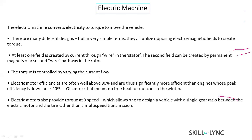Torque is controlled by varying the current flow — increasing torque requires higher current, and reducing current reduces the torque the motor produces. Electric motor efficiency is often well above 90%, making them significantly more efficient than combustion engines, whose efficiency is at most 40 to 50%.